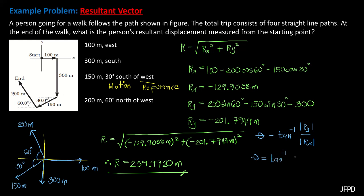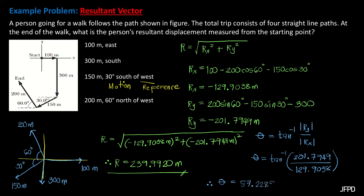That gives theta = arctan(201.7949 meters / 129.9038 meters). Inputting this equation on the calculator, the direction angle is equal to 57.2289 degrees.